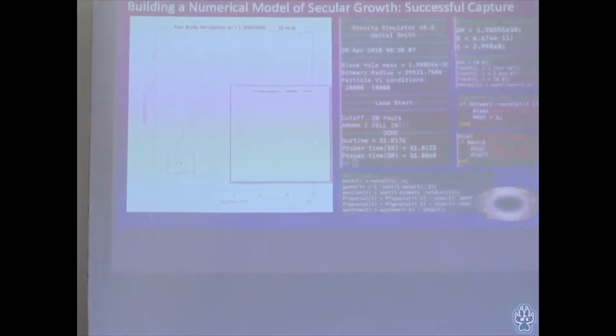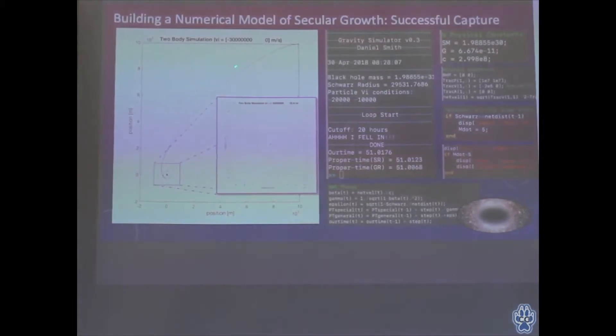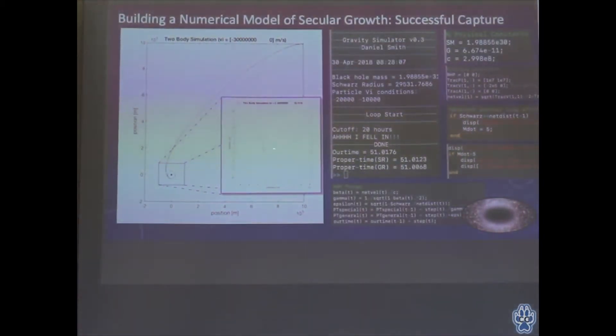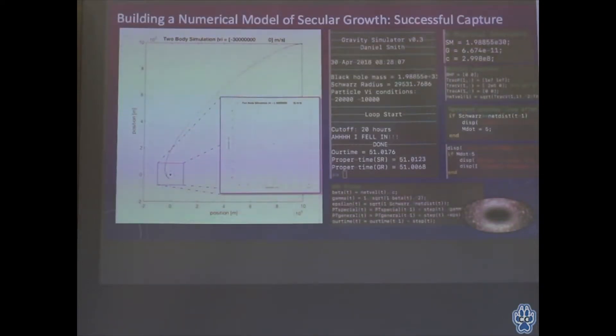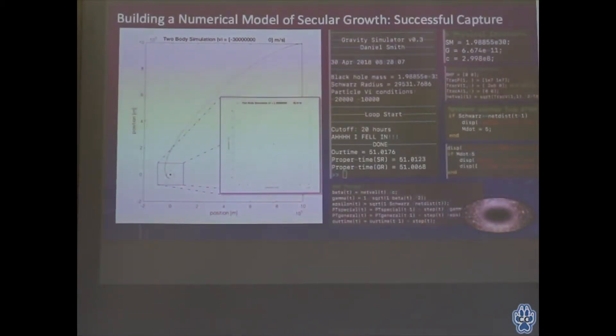Here's a successful capture from the final version of my program. On the left, the particle starts in the upper right corner and falls toward the black hole, eventually being captured. The black dot in the center is the singularity of the black hole, and this ring around it is the event horizon and Schwarzschild radius. The event horizon can be thought of as the point of no return. Anything that falls within this region, even photons of light, will never escape. When the computer detects the particle falling inside this radius, it terminates and tells me it was captured.